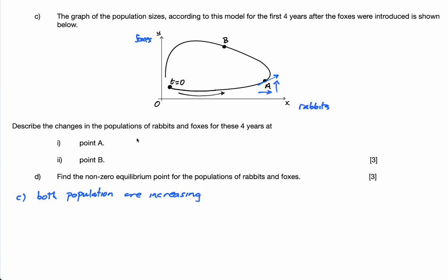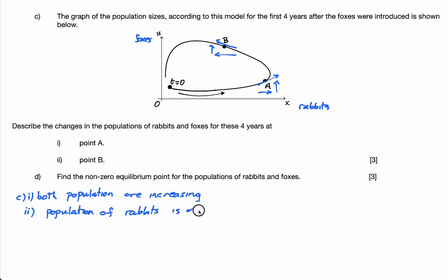The population of rabbits is increasing and the population of foxes is increasing — that's point A. At point B, if you look at the tangent again, there is an increase in the y direction but a decrease in the x direction, because x is now going that way but y is going that way. So: population of rabbits is decreasing, population of foxes is increasing.